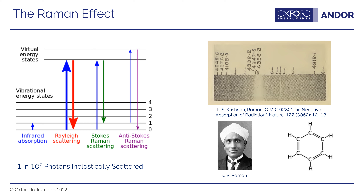What can also happen is light comes in, interacts with these virtual energy states, and the vibrations in the sample actually couple with the light and give energy to it. The light comes off the sample having energy greater than it came in with — that's called anti-Stokes-Raman scattering. The Stokes and anti-Stokes Raman scattering are very rare events, about one in a million or one in ten million photons. The rest are just the elastic Rayleigh scattering.